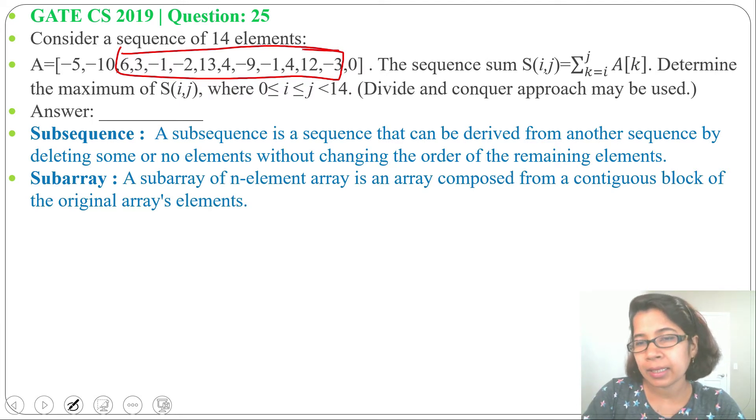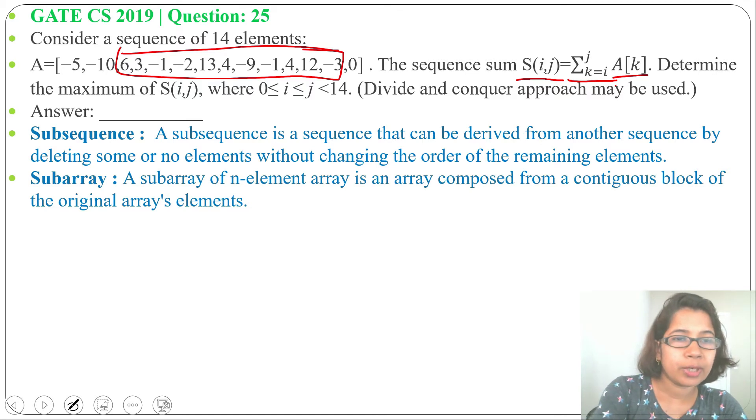Now understand what it is asking. It is asking S(i,j), sum i to j, equals sum k equals i to j, A of k. It is asking a subarray summation that ranges from i to j, and that should be maximum. We need to find maximum of S(i,j).